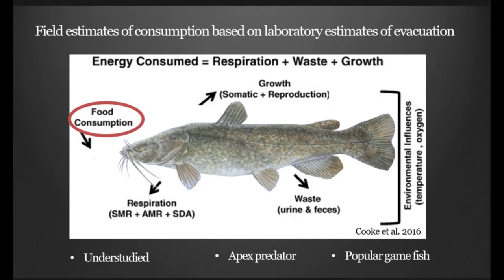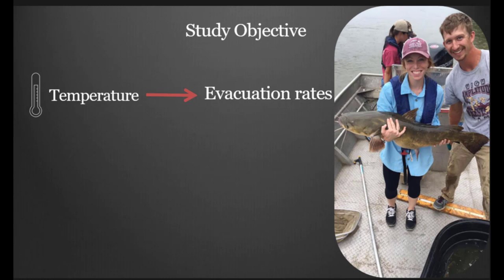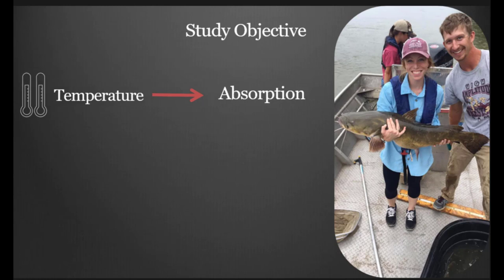We chose to look at the flathead catfish, and we know this is an understudied species within a laboratory setting. They're just incredibly difficult to rear in a lab. They're expensive. Not much has been looked at. We know that they're an apex predator within both native and non-native populations that they exist, and they're a popular game fish for many anglers as well. My specific objective of this project was to look at temperature's influence on the evacuation rates of juvenile flathead catfish, as well as look at temperature's effects on the absorption efficiencies of these juvenile flathead catfish.